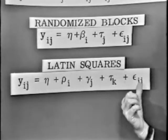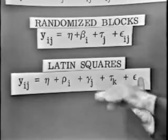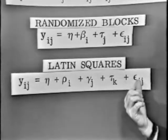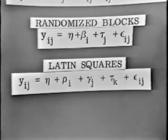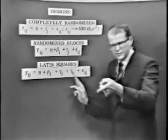And finally, we have the errors, which Mother Nature is always throwing on us to disturb things. We're assuming these are random, normally, and independently distributed. Okay, now that we have the mathematical model, we can go and look at the analysis of variance table.